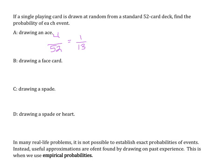Drawing a face card. So we have 52 cards in a deck. There are four suits, and each suit has three face cards: Jack, Queen, and King. So we have a total of 12 face cards. So three out of 13 is our probability of obtaining a face card.